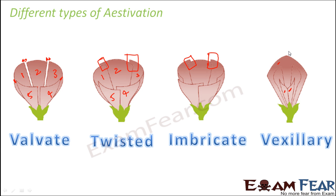So looking at the screen, you can understand how the same number of petals can be arranged in many different ways. The arrangement of petals has to be either valvate, twisted, imbricate, or vexillary.